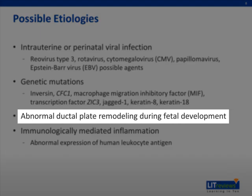Intrahepatic bile ducts are derived from primitive hepatocytes that form a sleeve or ductal plate around intrahepatic portal vein branches and associated mesenchyme in early gestation. Remodeling of the ductal plate in fetal life results in the formation of the intrahepatic biliary system. This is supported by similarities in cytokeratin immunostaining between biliary ductals and biliary atresia in normal first trimester fetal bile ducts. These findings suggest that non-syndromic biliary atresia might be caused by a failure of bile duct remodeling at the hepatic hilum, with persistence of fetal bile ducts poorly supported by mesenchyme.